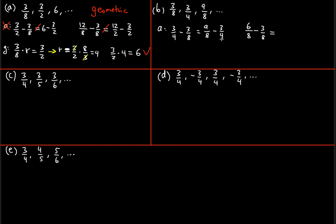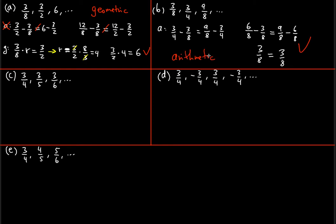This should equal the right side: 9/8 minus 6/8 (matching the same denominator). Checking: 6/8 minus 3/8 is 3/8, and 9/8 minus 6/8 is also 3/8. These are indeed equal, so the arithmetic sequence works. Since the arithmetic sequence works, the geometric cannot possibly also work, so this is arithmetic.